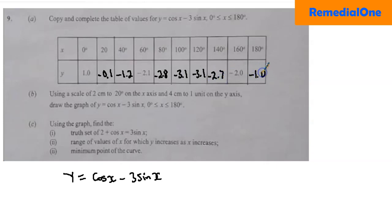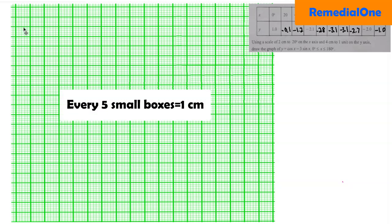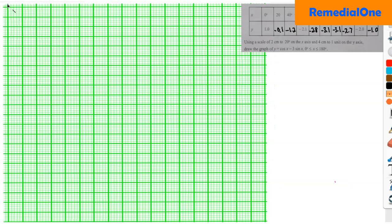So we have completed the table. Now moving on to part b — drawing the graph. We create our axes: looking at the x-values, most are positive so the x-axis goes to the right. Looking at the y-values, most are negative so we leave more space downward. Every five little boxes is one centimeter, so ten little boxes is two centimeters — keep that in mind for plotting.